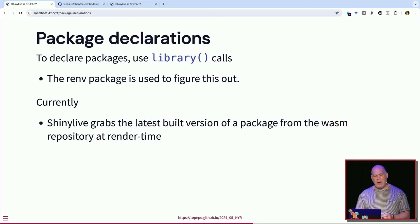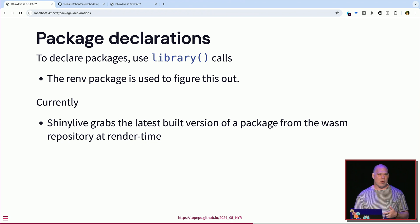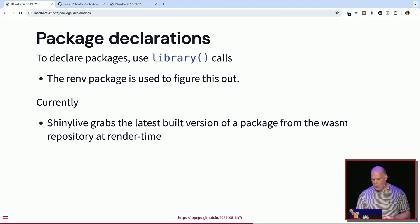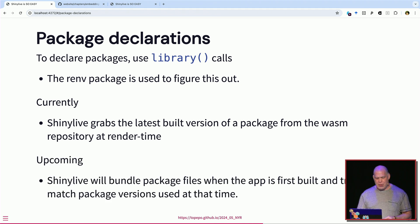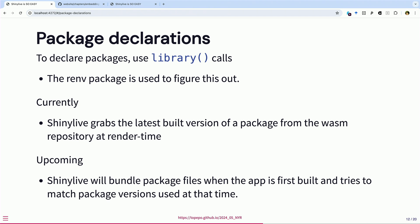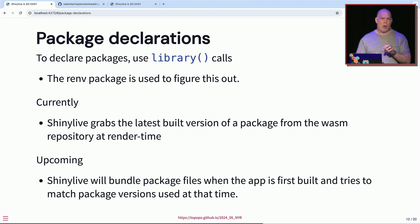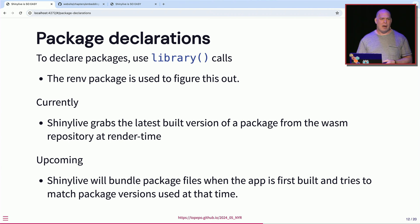Right now, when you render your Shiny app it goes out, downloads R, then goes to the Wasm code repository and gets the current version of the packages. But we think a lot about reproducibility. George is working on a solution: at build time — not render time — it will go to the Wasm repository, get the most recent versions available then, and either cache them or retain all the old binary versions so you can get the package version you started with. Eventually we could use renv lock files or snapshots, but we're not quite there yet.